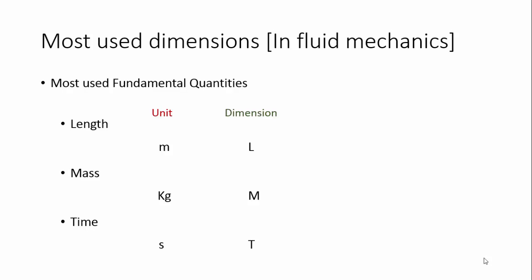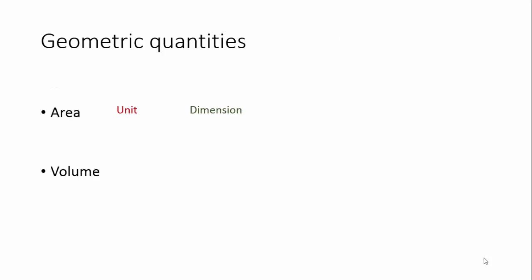So these are the three fundamental quantities from which all other quantities are derived. Let us see some derived quantities — these are the geometry quantities. The first one is area; its unit is meter squared and its fundamental dimension is L squared, because meter stands for length L. Similarly, volume: the unit is meter cubed and its dimension is L cubed.